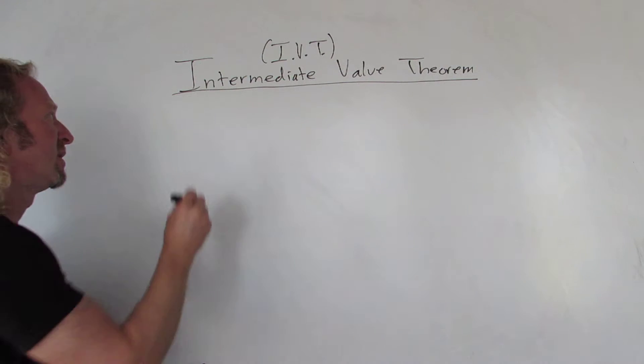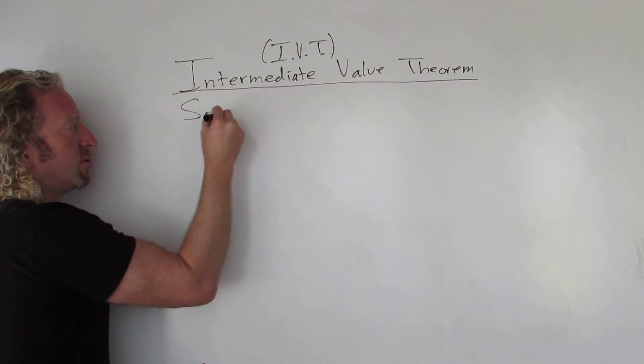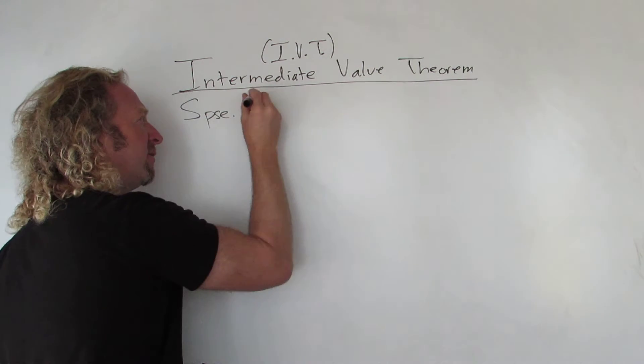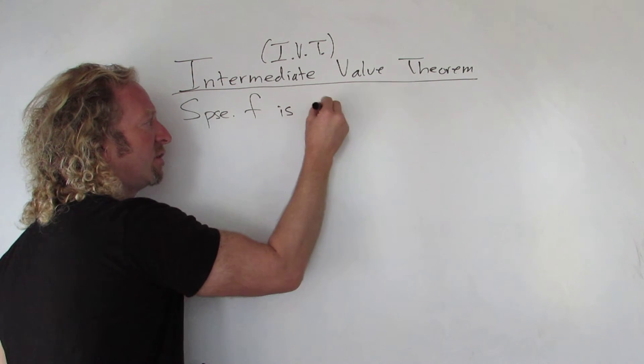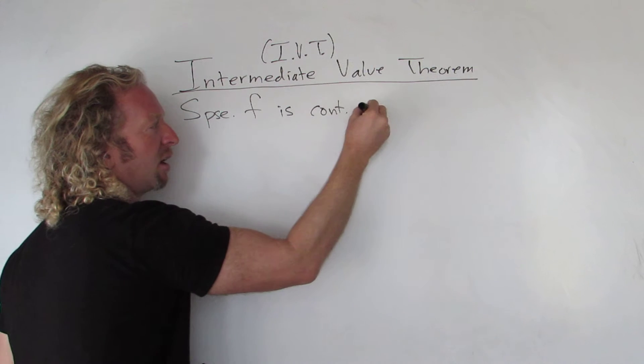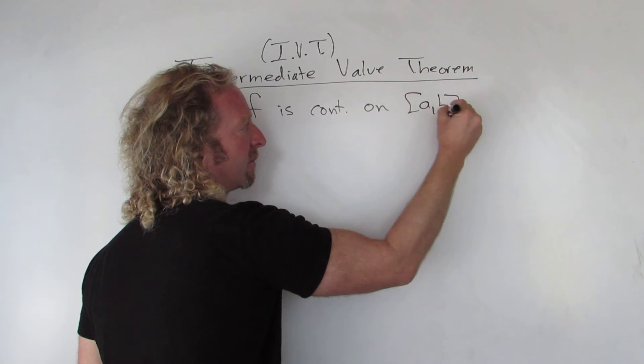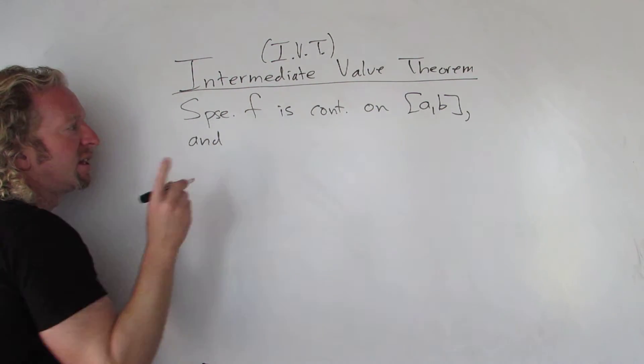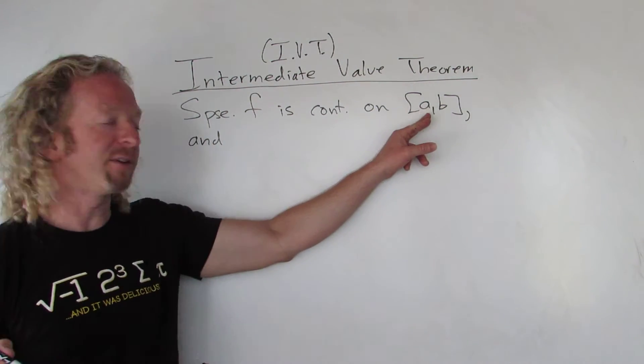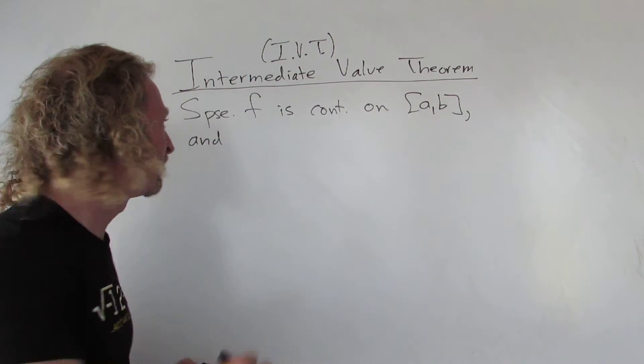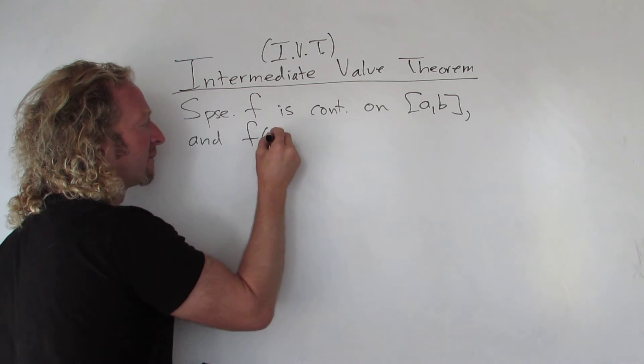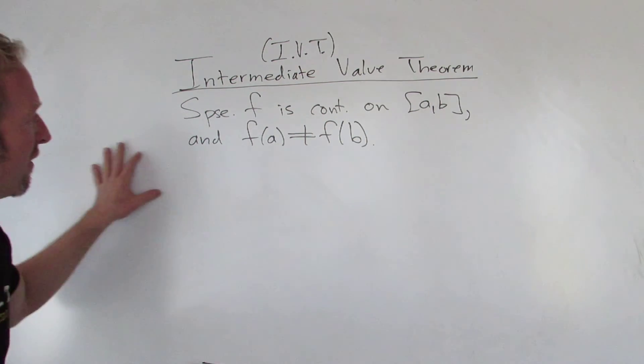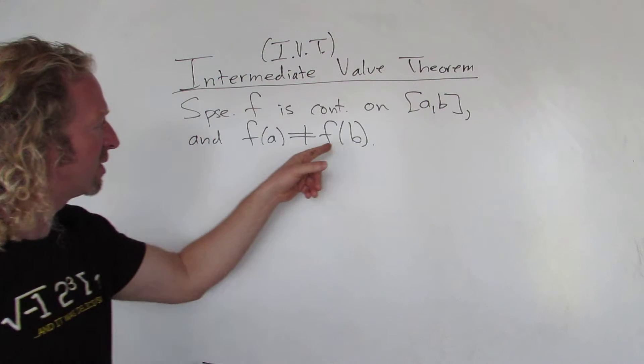The Intermediate Value Theorem says the following. Suppose you have a continuous function on a closed interval, so F is continuous on the closed interval [A, B]. And the values of the function at the endpoints are not the same, so F(A) is not equal to F(B). So those are the conditions for the Intermediate Value Theorem.